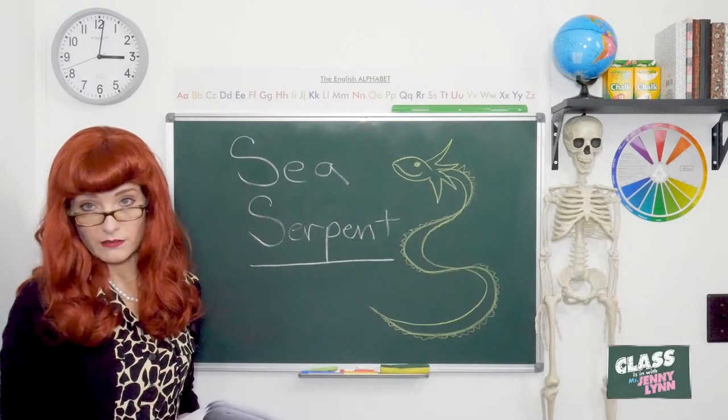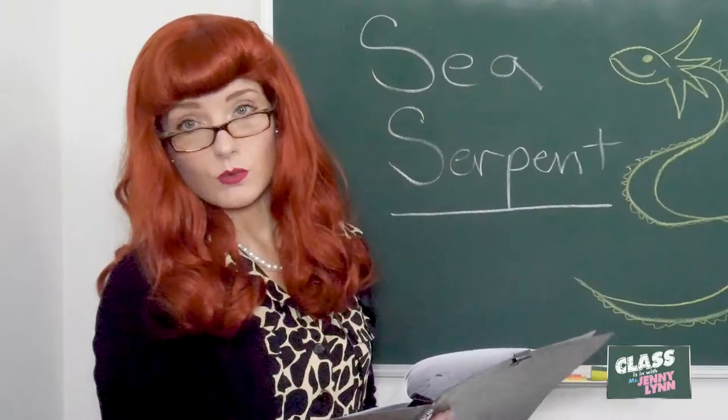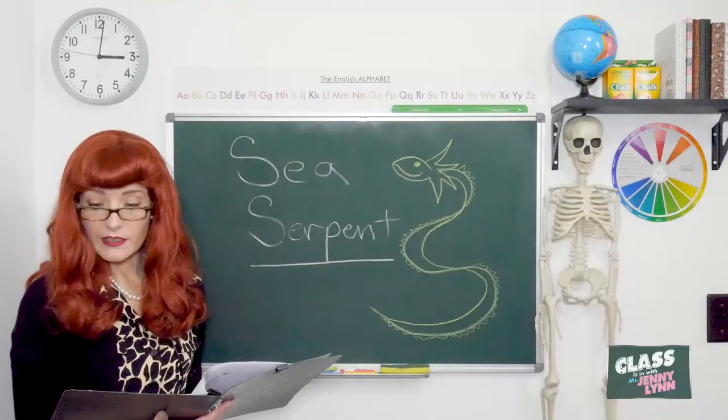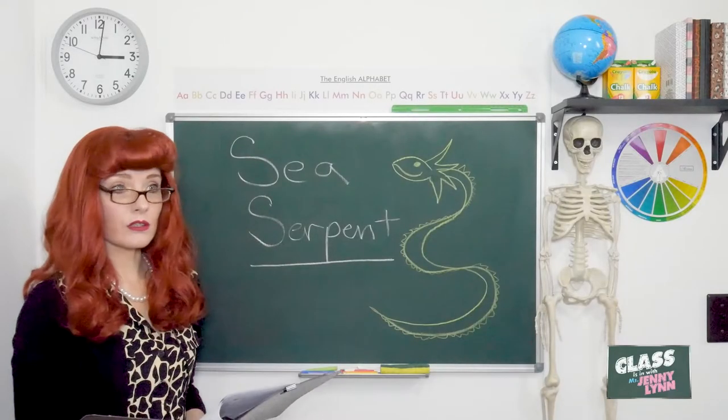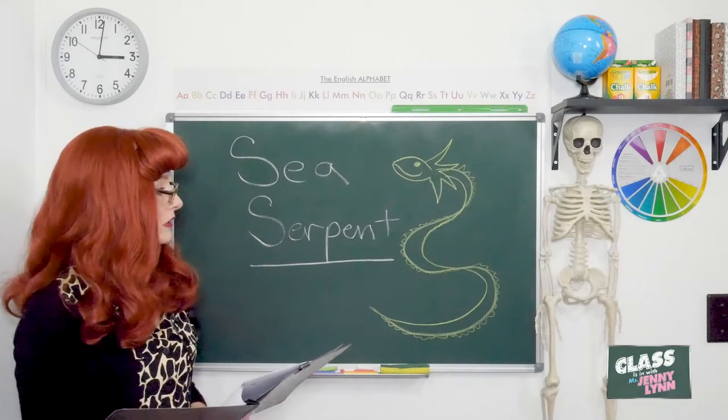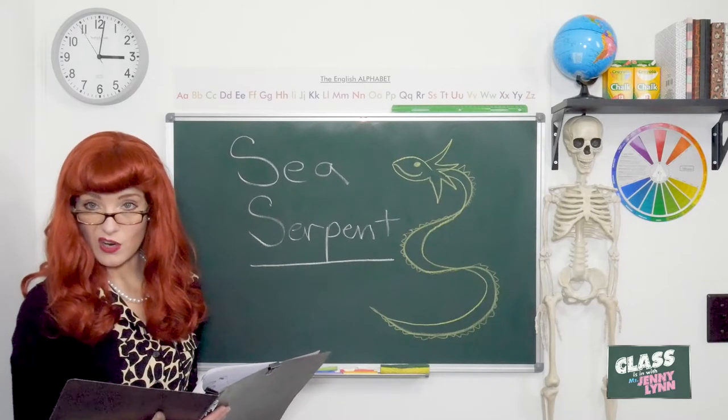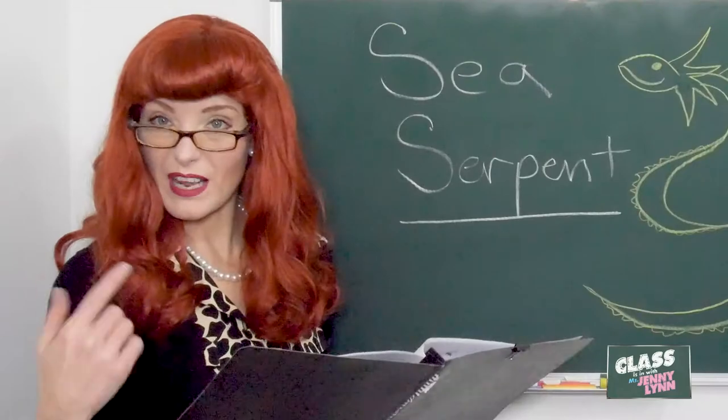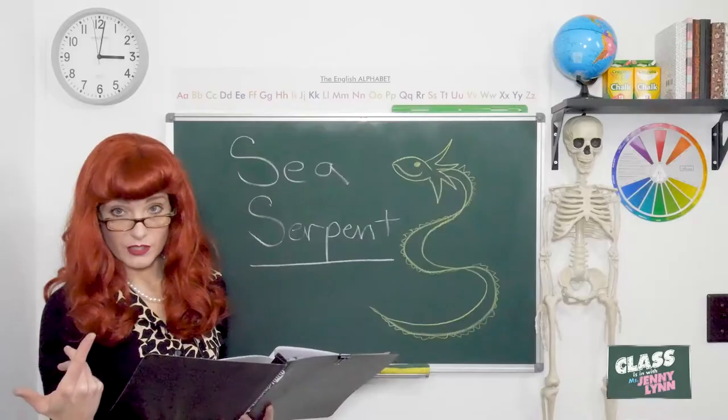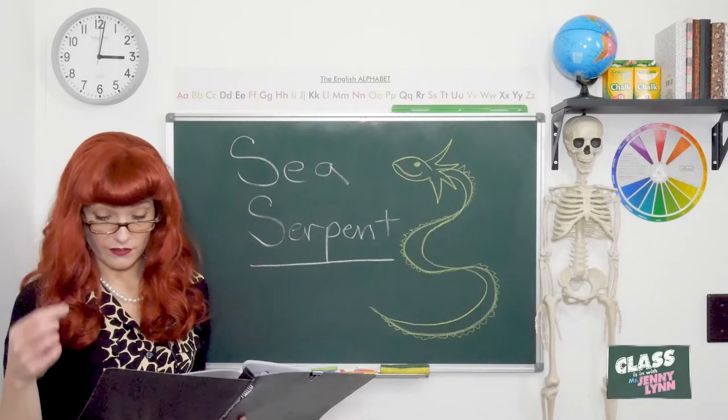There are stories about sea dragons, sea serpents, whatever you want to call them. And so one particular Norse belief was that there was a sea serpent that was long enough to wrap around the entire globe, which is a pretty darn long critter if you ask me.